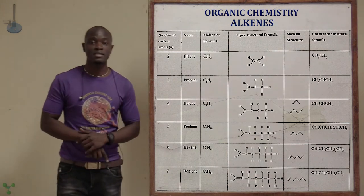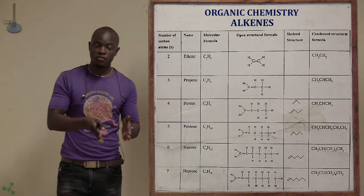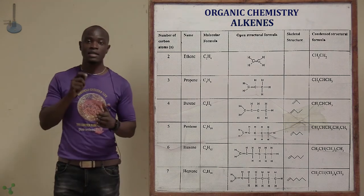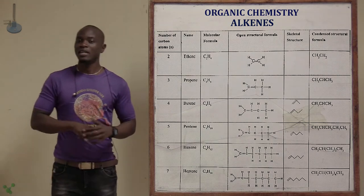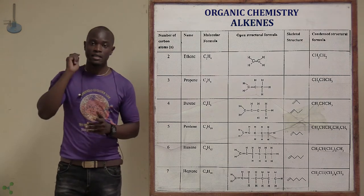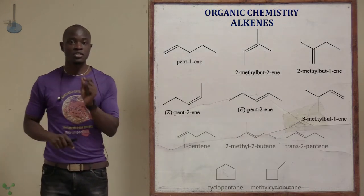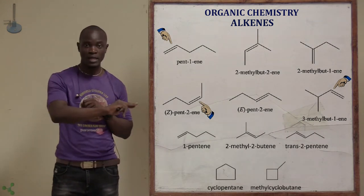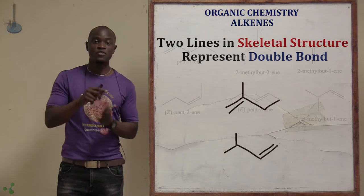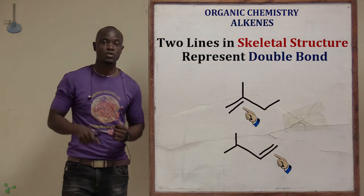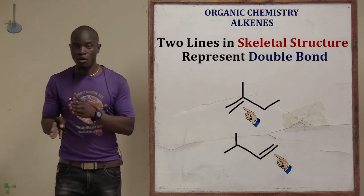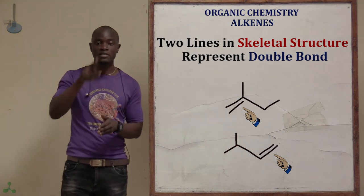Below is a table summarizing the alkenes from the first member, ethene. The table shows the designated numbers, relevant names, molecular formula, open structural formula, skeletal structure, and condensed structural formula. In the skeletal structure, two close lines represent the double bond, followed by continuing straight lines.